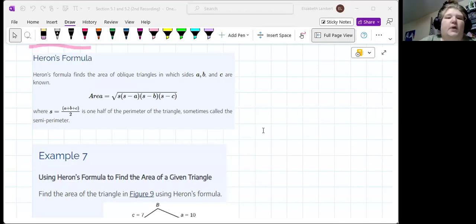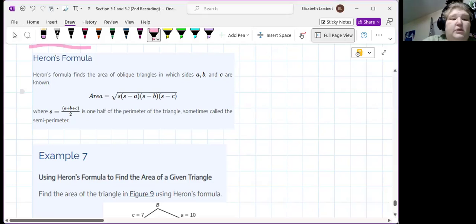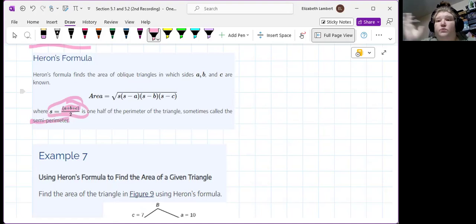All right, so our last part, section 5.2, involves this rarely used formula called Heron's formula, which finds the area of a triangle when only given the three sides. But it involves this extra calculation called the semi-perimeter, because you take the perimeter and divide it by two. So, we're just going to practice using this formula a couple times.